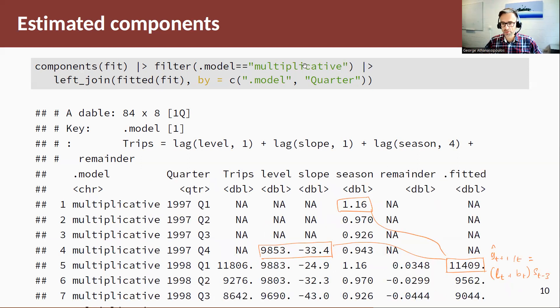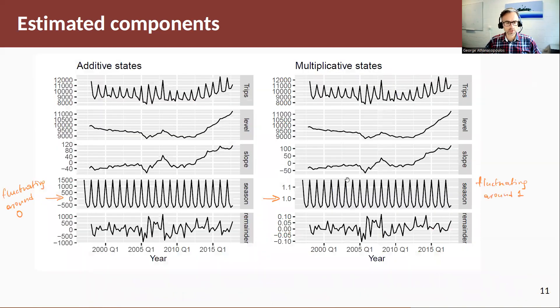In the multiplicative method case, our first fitted value is equal to L T plus BT times the seasonal index. We can plot these out. The level and the slope components are fairly similar, a bit of variation between them. But the big difference again is the difference in the seasonal component, additive on the left, multiplicative on the right, and of course the remainder.